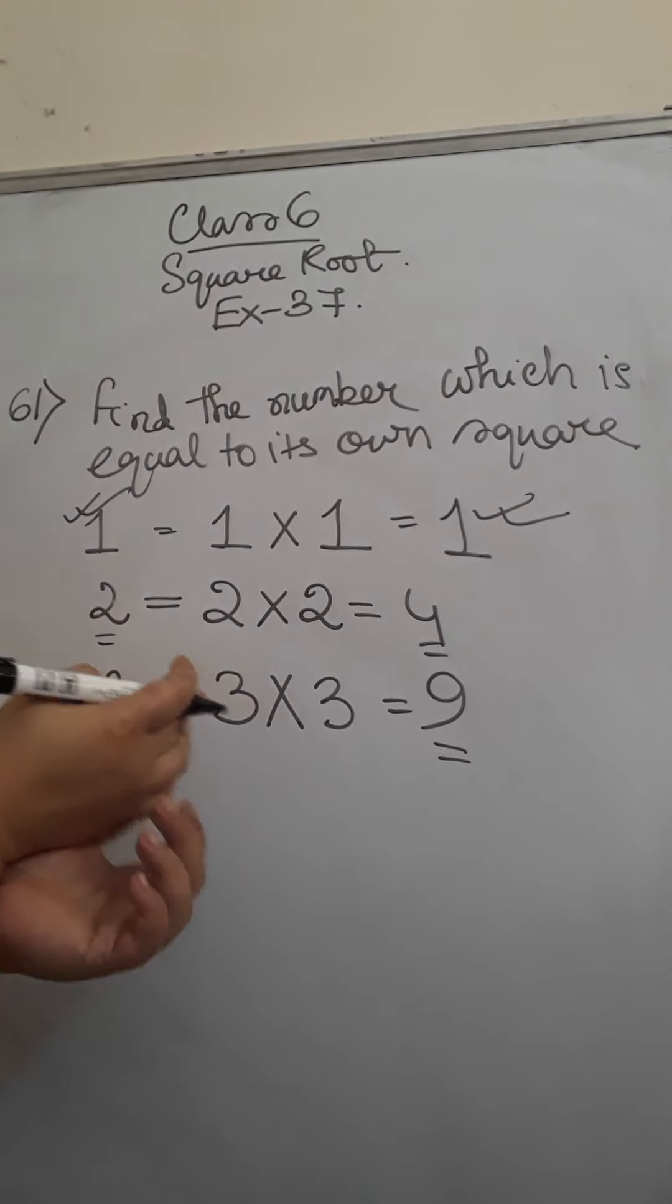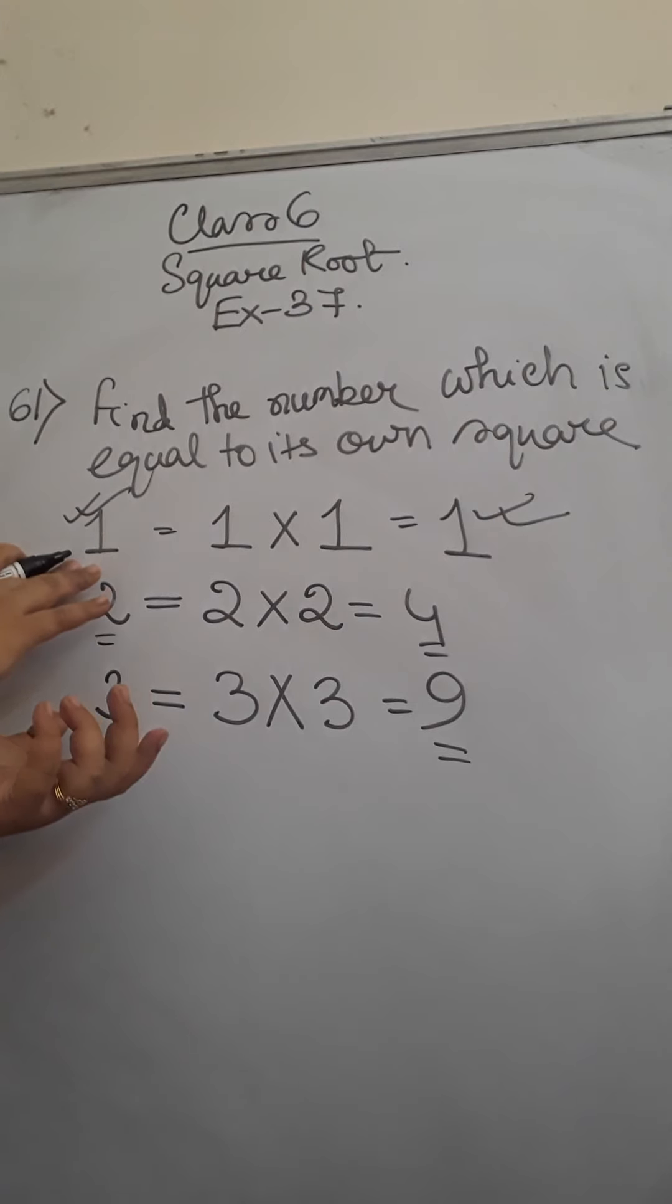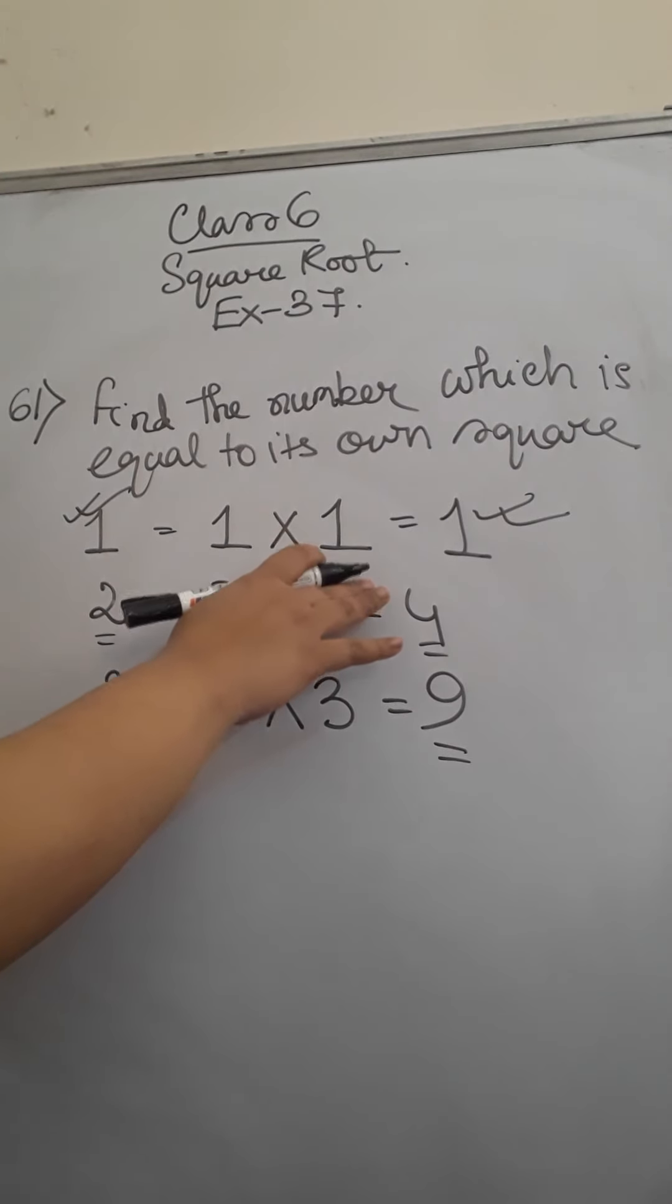So the answer of this question—it is a tricky question, you don't need to solve that but you need to know the fact that there is only one number, that is 1, which is equal to its own square. That is, after multiplying it, after finding its square also, it produces the same result. The square of the number and the original number are same. So the answer is 1.